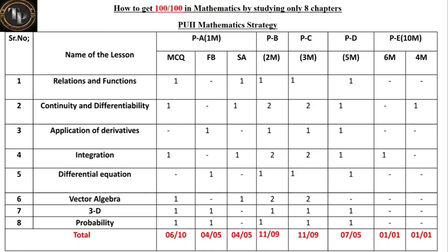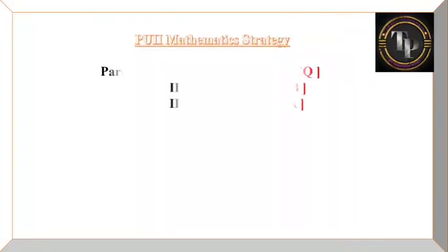If you do only these 8 chapters, you can get full marks, guys. Only 4 MCQs are left over - remaining everything is covered here. That means 96 marks can be scored by only these 8 chapters. But these 8 chapters you have to study - each and every problem of the NCERT book. Remember this point, guys.